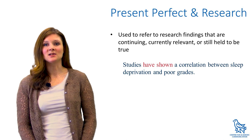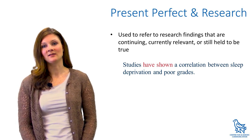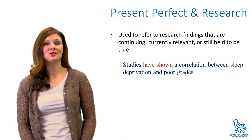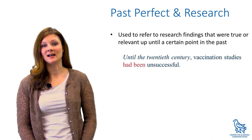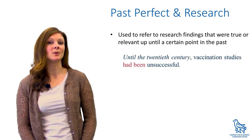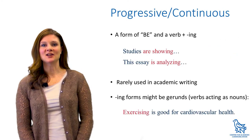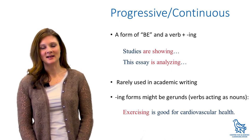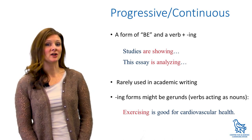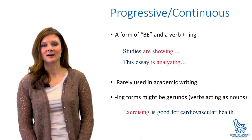The present perfect tense is used to refer to research findings that are continuing, currently relevant, or still held to be true. The past perfect tense can be used to refer to research findings that were true or relevant up until a certain point in the past. Other verb forms, such as progressive or continuous forms, are rarely used in academic writing. If you're not sure, stick with the present tense since it's the most common and the most clear.